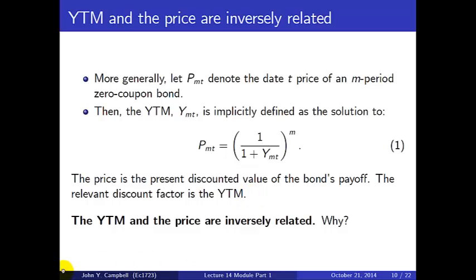A key point — a very basic property of interest rates — is that the yield to maturity and the price are inversely related. If the yield goes up, we're discounting the future fixed payment at a higher rate, so the present value is lower. In other words, a higher Y corresponds to a lower P, and vice versa.